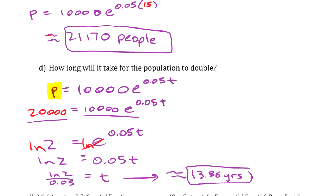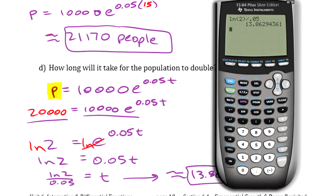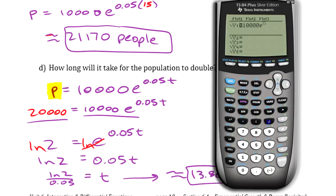That's how to do those two things algebraically. Now you can of course use graphing software if you put the function in — we're going to do that right now with the graphing calculator. We're going to put in y = 10,000 e^(0.05x). You've got to put x on here when you're graphing, not t, even though that's what you mean.